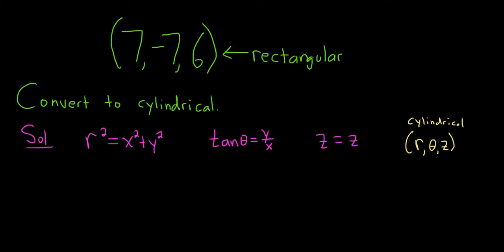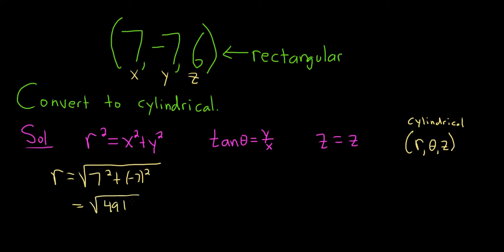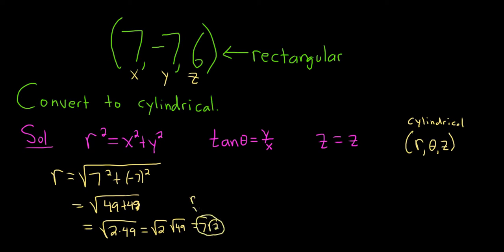Let's find r first. r is the square root of x squared plus y squared. So r is going to be the square root of 7 squared plus negative 7 squared, which gives us 49 plus 49. Now let's be clever: 49 plus 49 is 2 times 49, so we get the square root of 2 times the square root of 49, which is 7 root 2. So r is equal to 7 square root of 2.